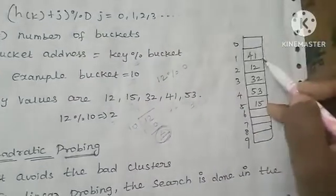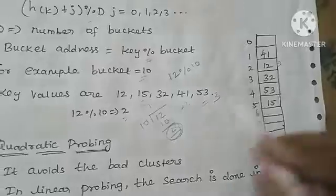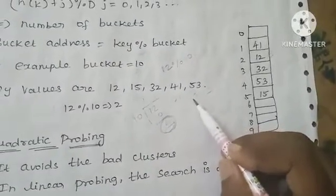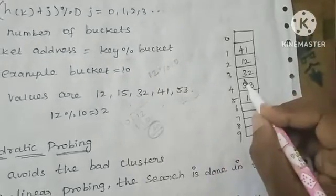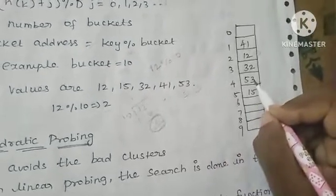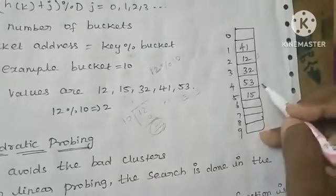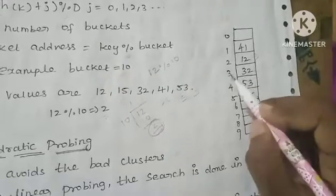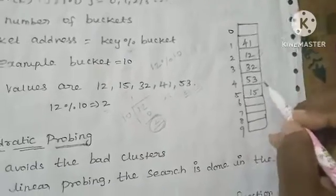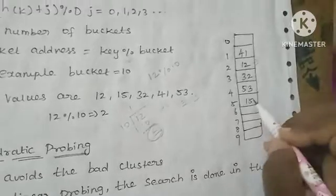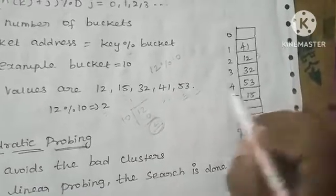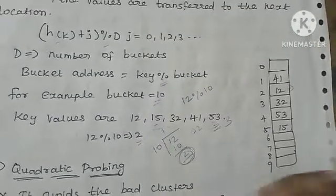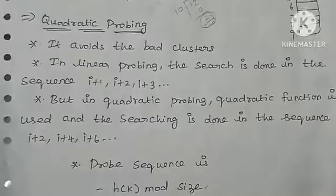Key 41: 41 mod 10 remainder is 1, so position 1 is occupied by 41. Key 53: 53 mod 10 remainder is 3, but position 3 is already occupied by 32. Using linear probing, we move to the next free location, which is position 4, and insert 53 there. This is how linear probing works.